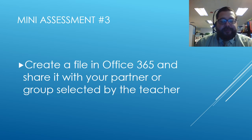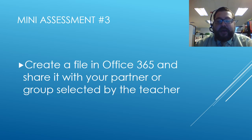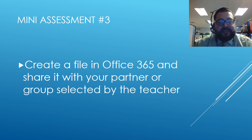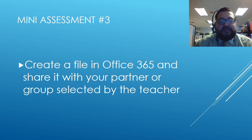Welcome to Mini Assessment Number Three. To show that you understand how to use Office 365, you need to: create a new file in O365, name it correctly using the convention we've shown (period, subject, assignment, and your name), upload it into Office 365, and then share it with a classmate or group your teacher has provided. If you have questions, re-watch the relevant portion of this video before asking your teacher. To complete Mini Assessment Three: create a file in O365, name it correctly, and share it with your partner or group.